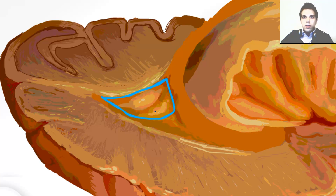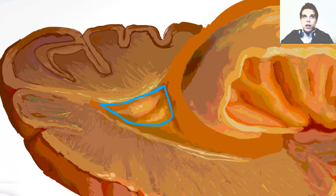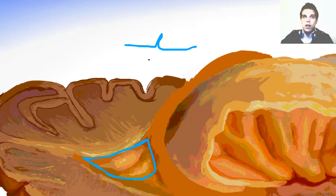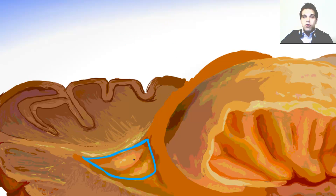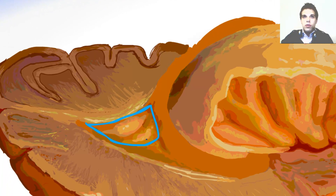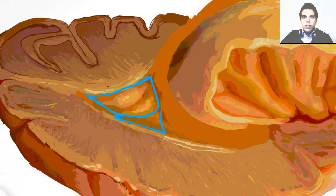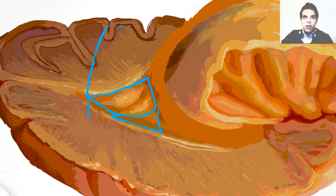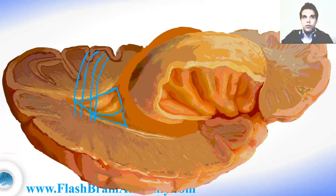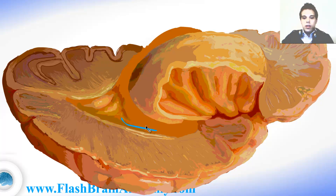The calcar avis is created by the calcarine fissure from the outside — an important fissure for visual function of the brain. So the bulb of the posterior horn and the calcar avis create the medial wall of the posterior horn of the lateral ventricle. The floor is created by the collateral trigonum, and the dorsolateral wall is created by the tapetum — those fibers that go above and cover the posterior horn. There is also a collateral eminence, which I illustrated better in the video about the fornix and lateral ventricle.